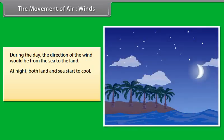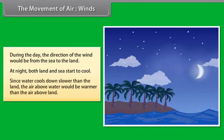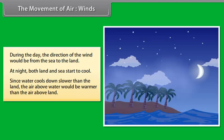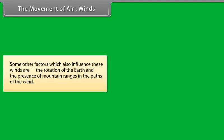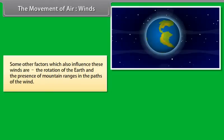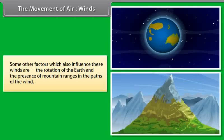At night, both land and sea start to cool. Since water cools down slower than the land, the air above water would be warmer than the air above land. All the movements of air resulting in diverse atmospheric phenomena are caused by the uneven heating of the atmosphere in different regions of the earth. Some other factors which also influence these winds are the rotation of the earth and the presence of mountain ranges in the paths of the wind.